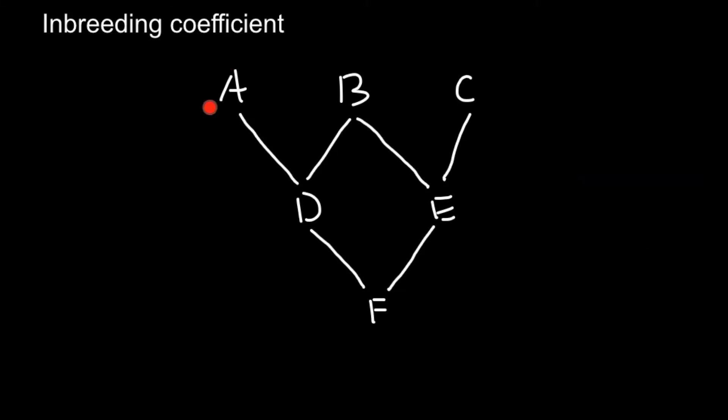Now imagine that each animal here is outbred, meaning for some particular gene they would have two different alleles and would be heterozygous — opposite to individual F which is going to be inbred. So let's say the genotype of individual A would be A1 and A2 — the same gene but represented by two alleles. Individual B would be A3 and A4, and individual C would be A5 and A6.